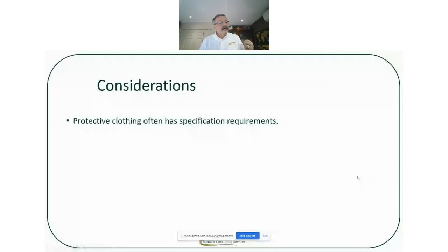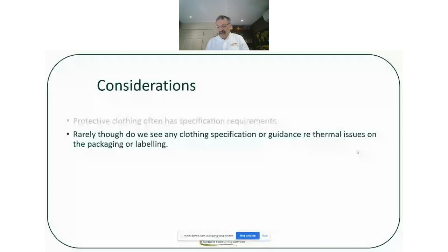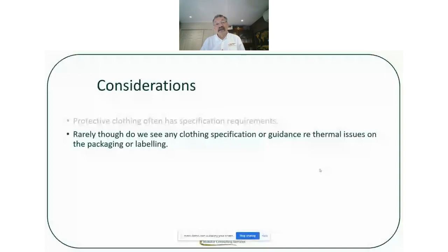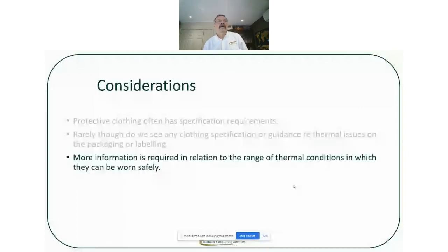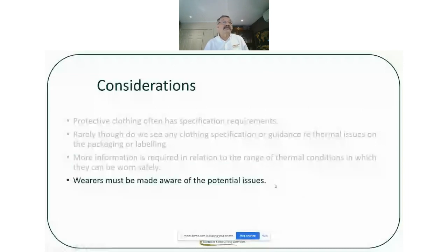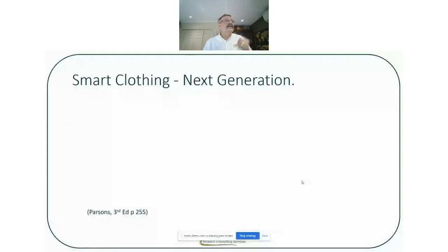When we buy protective clothing, it often has specification requirements — UV protection, arc flash protection — but rarely do we see any guidance in relation to thermal issues on packaging or labelling. Does it say somewhere on disposable overalls or arc flash clothing that you will be increasing the thermal heat load on the individual? We need more information on those labels and in education regarding the range of thermal conditions in which they can be worn safely, and some guidance as to what needs to be done. Wearers need to be made aware that while they're being protected, there are complications associated with them.